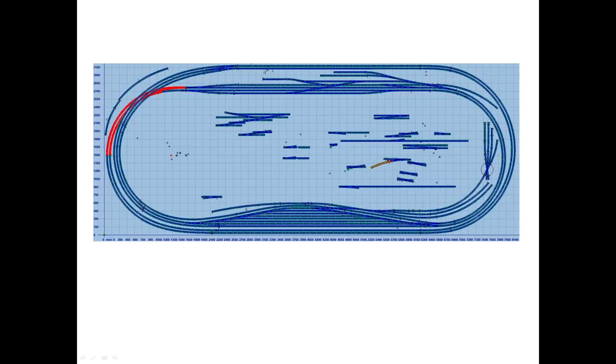The layout will eventually be a looped figure of eight on two levels with a maximum gradient of one in a hundred between them. The two laps of the room are close to complete, thanks largely to pressure from Melbourne Fine Scale group members who want a continuous run to test their locomotives.